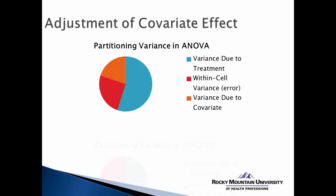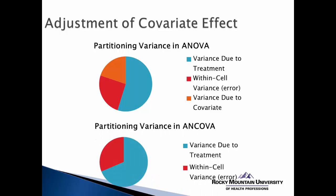What ANCOVA allows us to do is basically remove that orange portion of the error variance so the error variance shrinks. So now the red and orange no longer constitute the error variance — now it's just the red, the true within-cell error variance. And that basically makes the variance due to the treatment become larger.